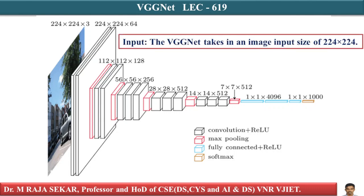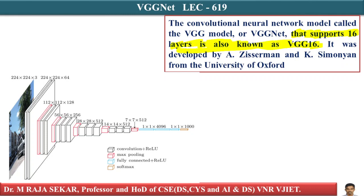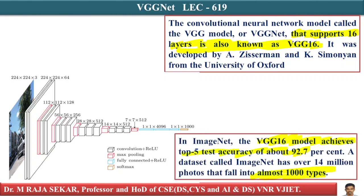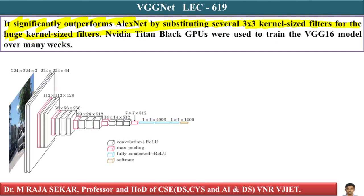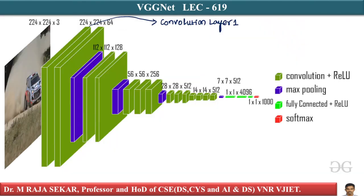Let's recall what we discussed previously. The VGG Net takes an input image size of 224 by 224 by 3. It is called VGG16 because it supports 16 layers, and it was developed by Simonyan. It has an accuracy of 92.7% and classifies images into 1000 categories. It significantly outperforms AlexNet by substituting larger filters with several 3x3 kernel size filters.